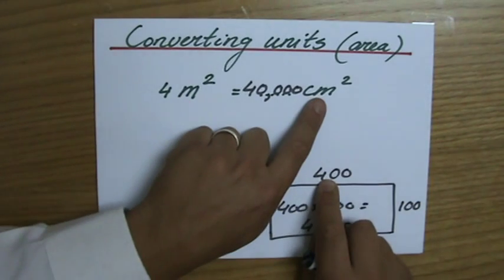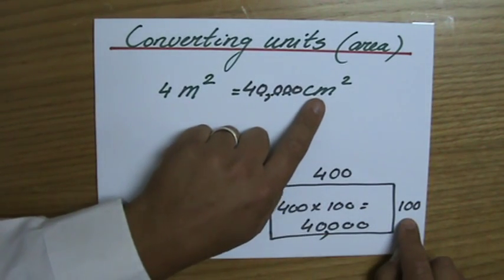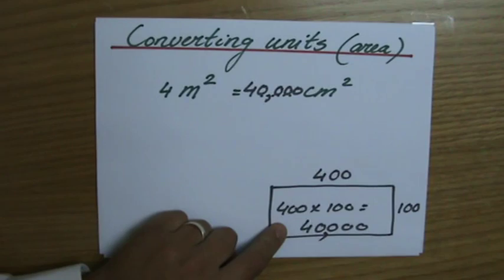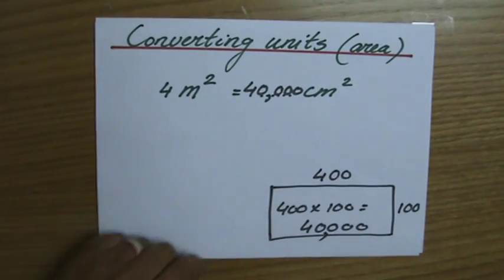Then I'll change that meter into centimeters, I'll change that meter into centimeters, and I'll find the area: 40,000 square centimeters. Can't go wrong. Let's see you at the next video with some more examples.